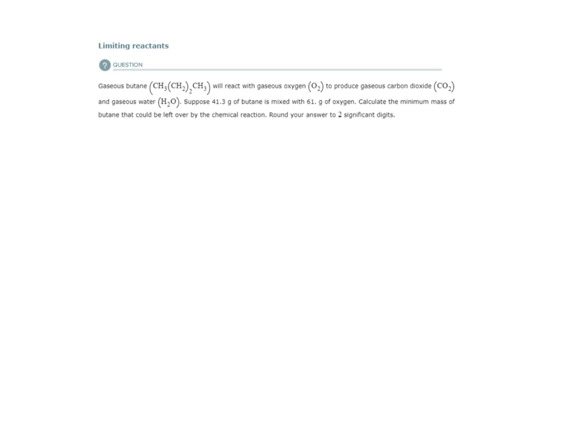So the first thing before we do any stoichiometry is we need the balanced chemical equation. What are our reactants? We have gaseous butane reacting with gaseous oxygen to produce carbon dioxide gas and water vapor. I double-checked my chemical formulas. Oxygen is diatomic, carbon dioxide, and water. I have all my reactants and products.